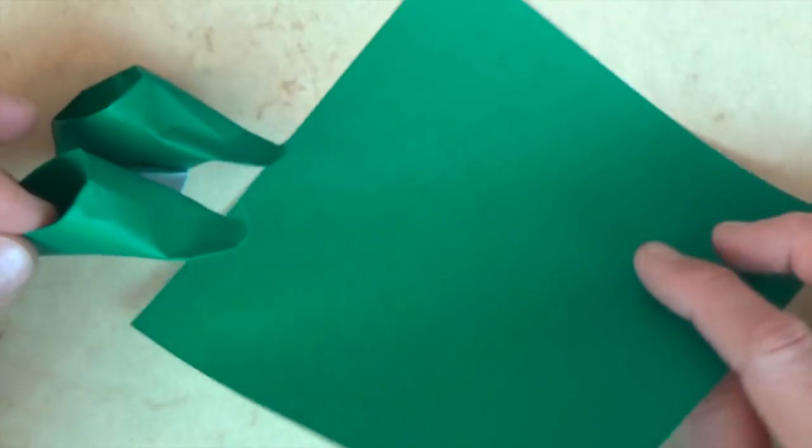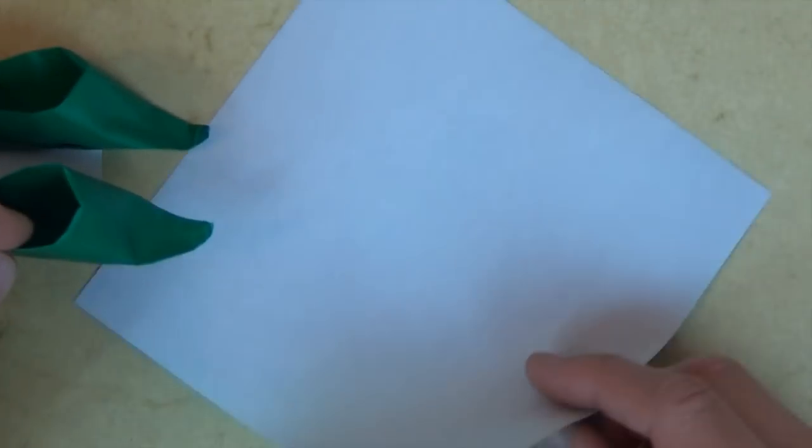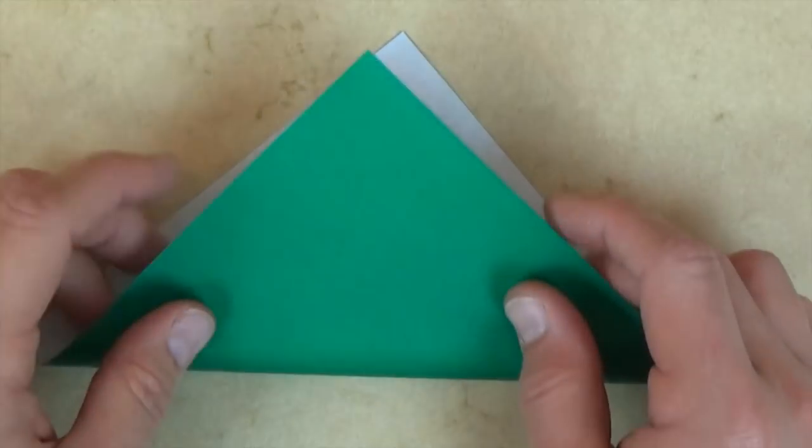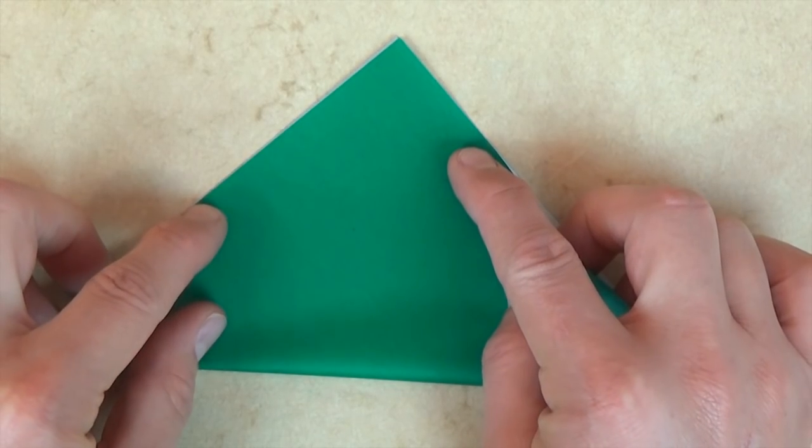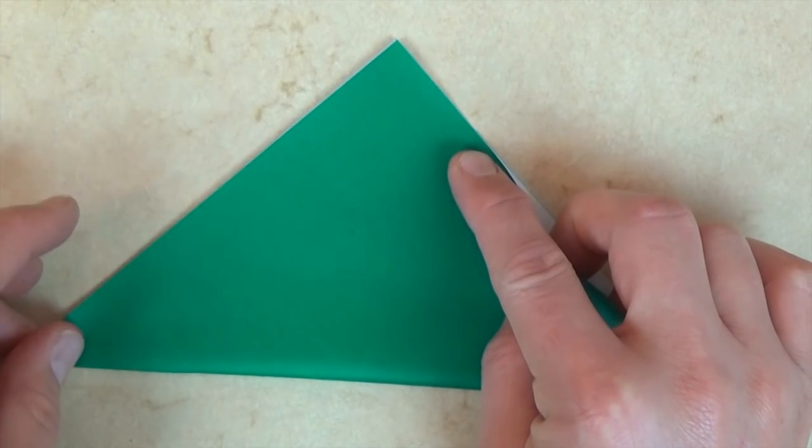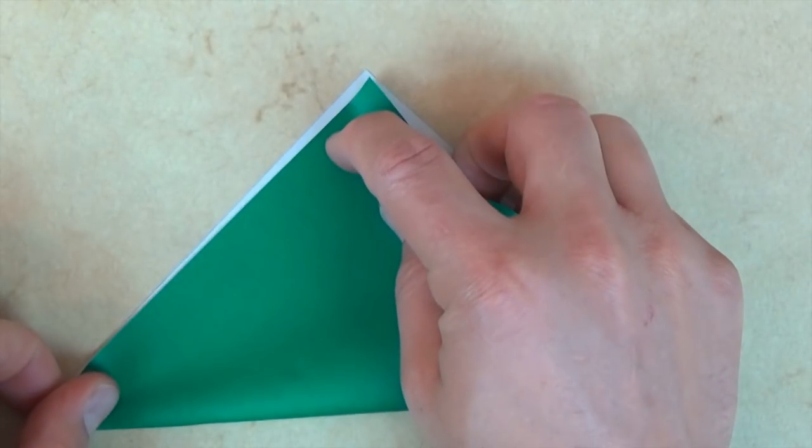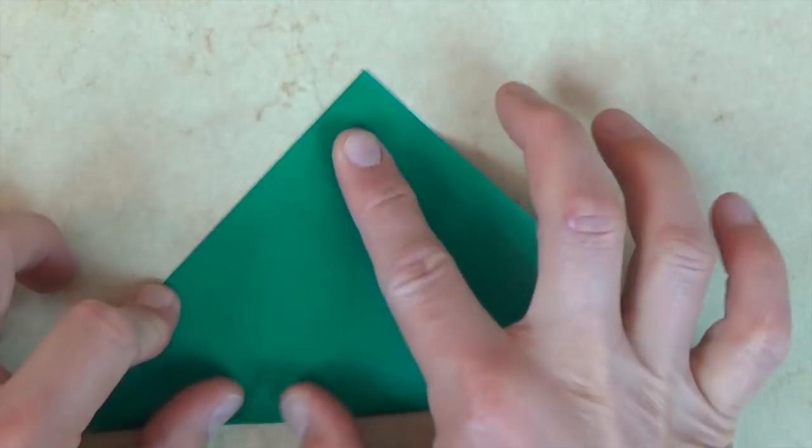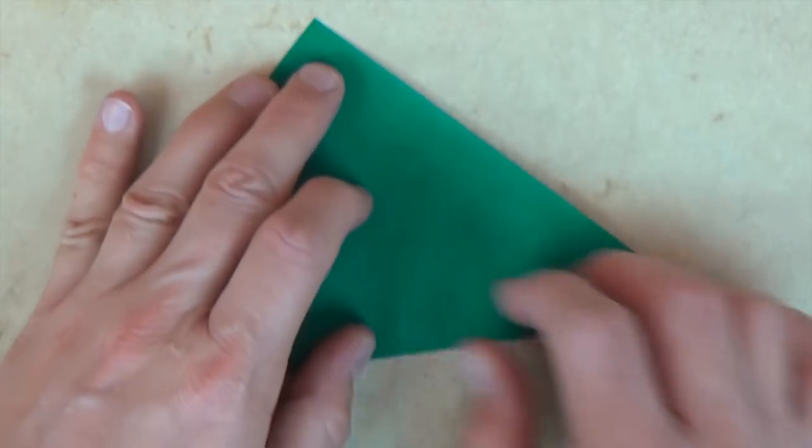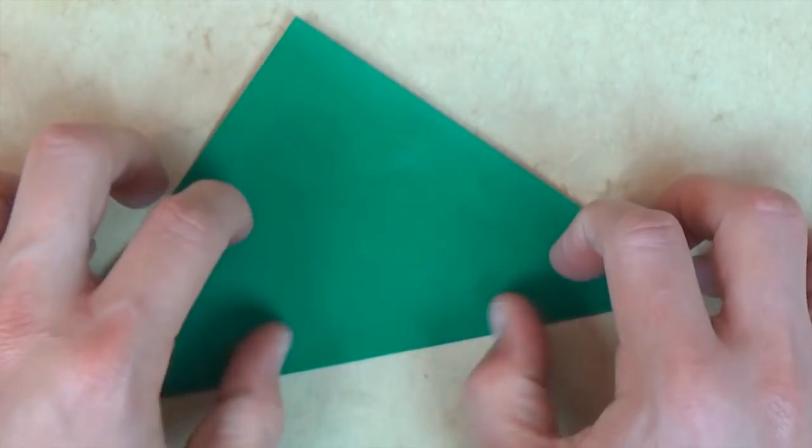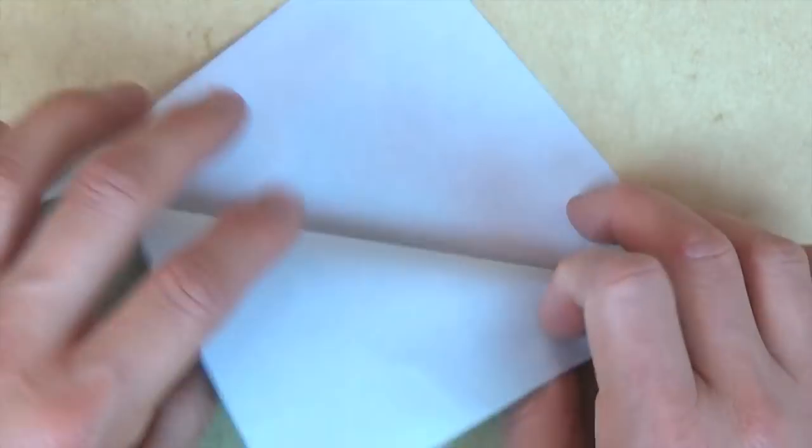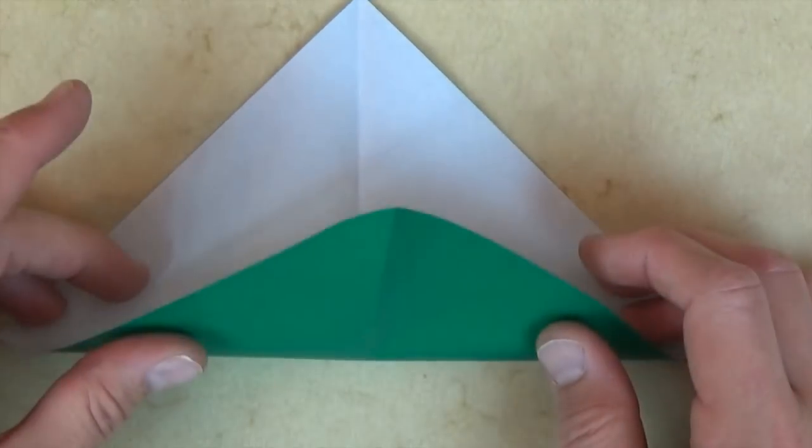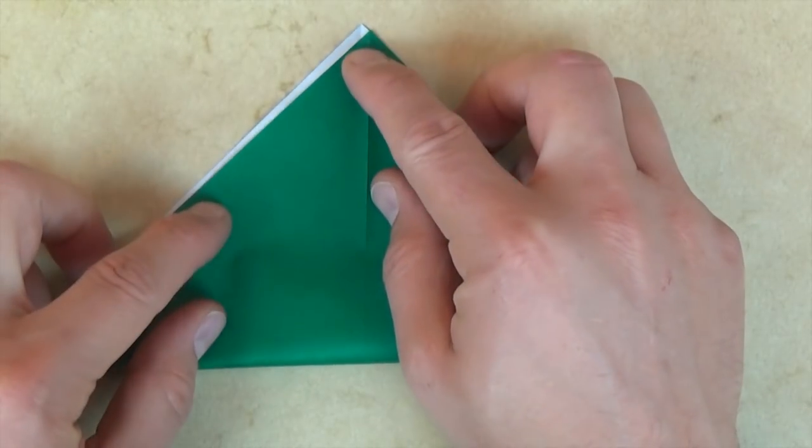Alright, so for this model we're going to use a single square and let's begin white side up. Let's valley fold diagonally in half. Try to make really exact folds and crease sharply. Now let's unfold and rotate 90 degrees and fold diagonally in half in this direction.